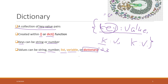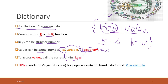As we talk about more and more data containers it can get a little complicated. We can put a list into a dictionary, and we can also put a dictionary into a list.